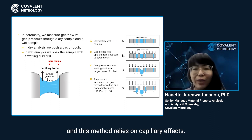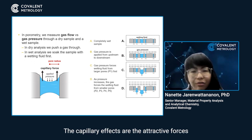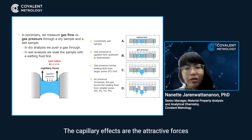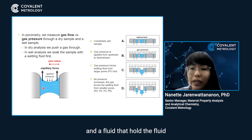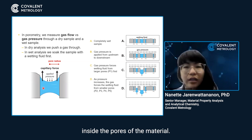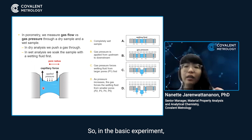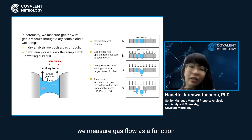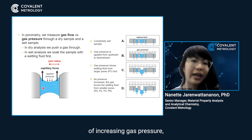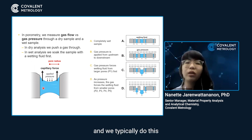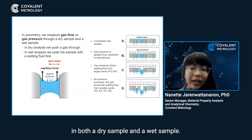This method relies on capillary effects — the attractive forces that occur between a surface and a fluid that hold the fluid inside the pores of the material. In the basic experiment, we measure gas flow as a function of increasing gas pressure, and we typically do this in both a dry sample and a wet sample.